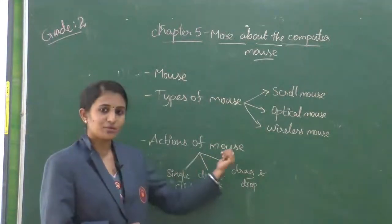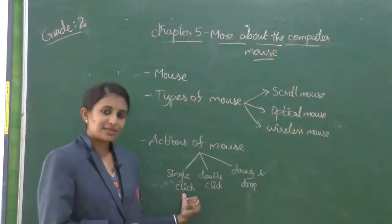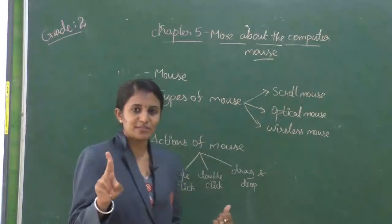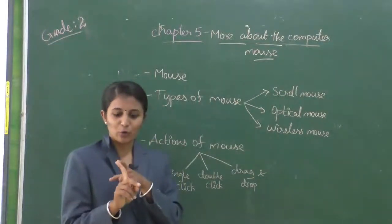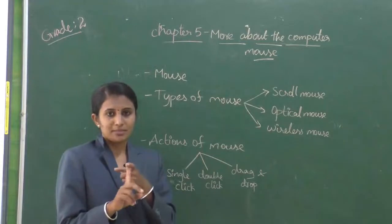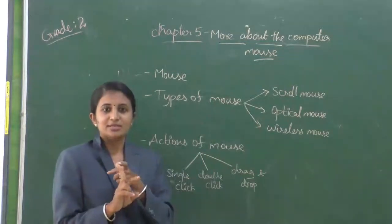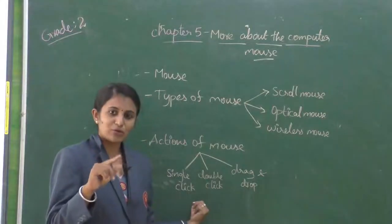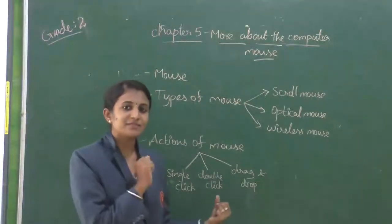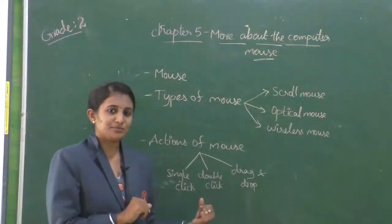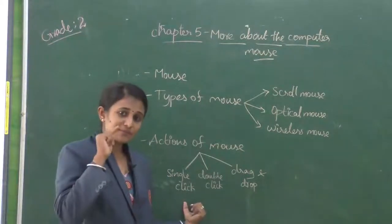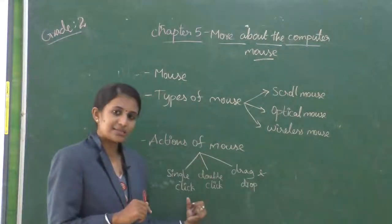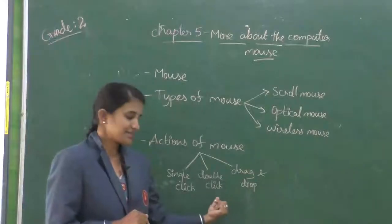First action on the mouse is single click. What is the use of single click? We will be using two fingers to use mouse. One is pointing finger for left mouse button and one is middle finger for right mouse button. If we need to use single click, we click on left mouse button for selecting the file or selecting the image. That is the use of single click. We need to just press and release the left mouse button. Automatically the single click happens.